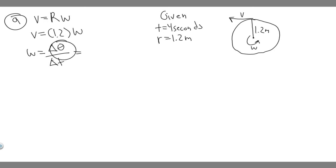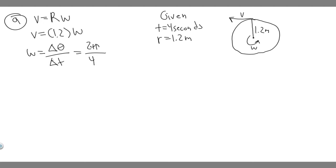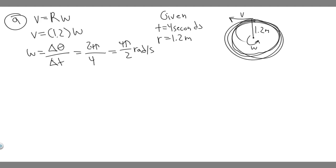Angular velocity is the change in theta over the change in time. One rotation takes four seconds, and one rotation covers two pi radians. So omega equals two pi divided by four seconds, which simplifies to pi over two radians per second. That's our angular velocity — the speed at which the merry-go-round spins.